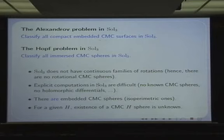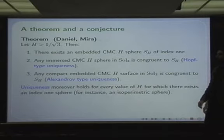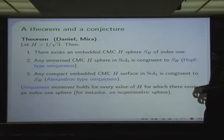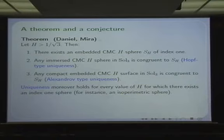The basic result I'm going to expose in these two lectures was obtained jointly with Benoit. Assume you are given a value for the mean curvature greater than a certain constant (which I will explain later). Then we have assertions regarding existence and uniqueness. Regarding existence: there exists a constant mean curvature sphere with that prescribed mean curvature, and it is embedded and moreover has index 1.